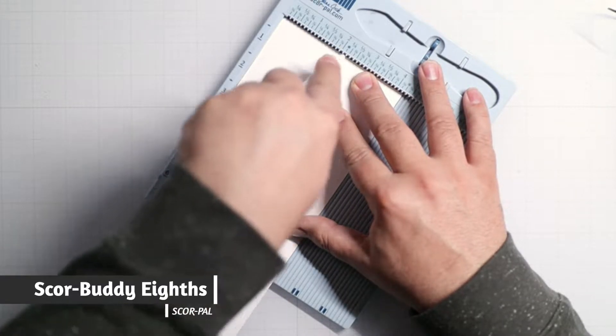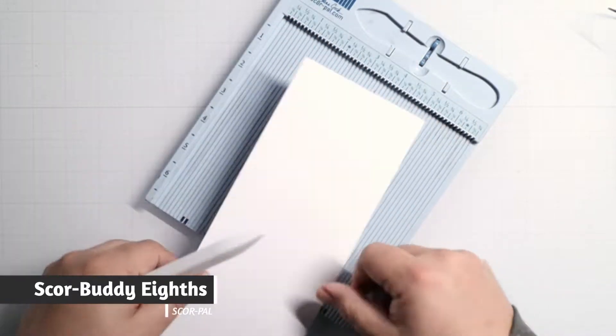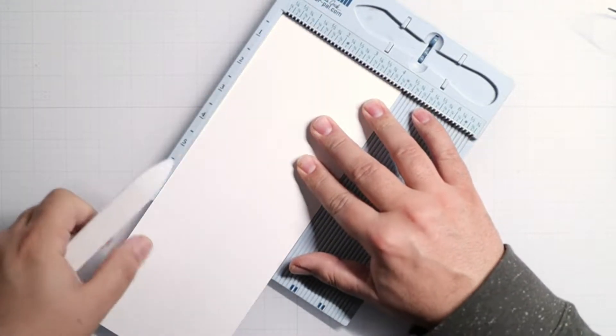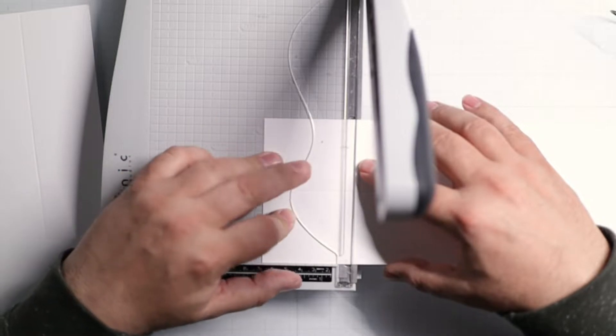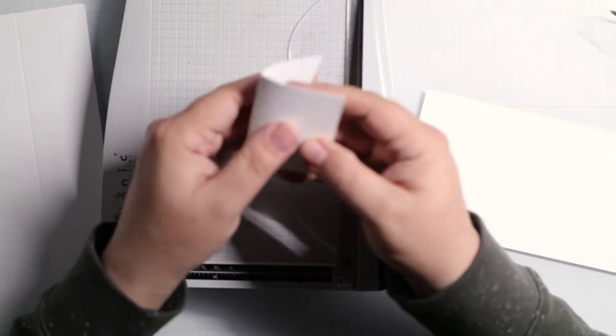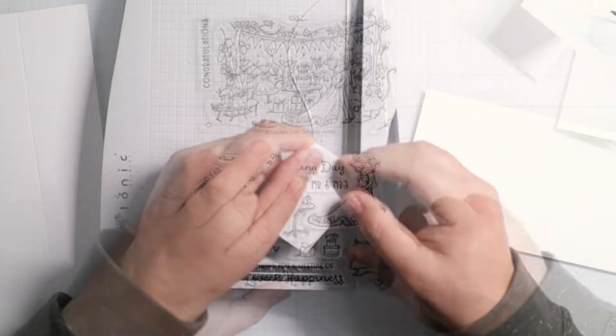We're going to use a full sheet of cardstock, split it down lengthwise, then score that lengthwise, and then we're going to trim these into little cards measuring two and three-quarters by two and one-eighth inches. These are great little sizes to fit in a wallet or pocket.